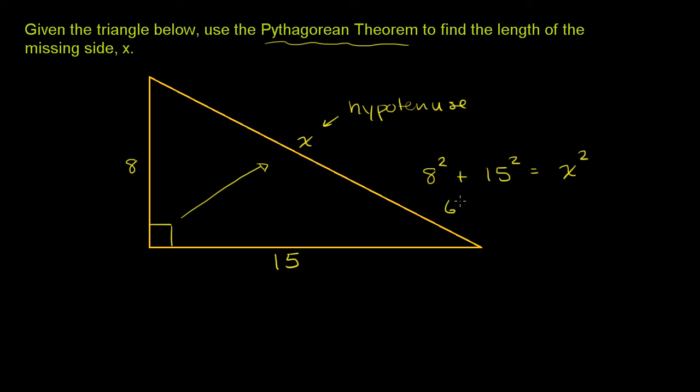8 squared is 64, 15 squared is 225. That needs to be equal to x squared. 64 plus 225 is 289, which equals x squared.